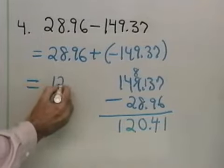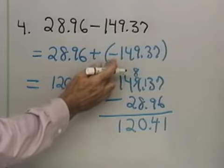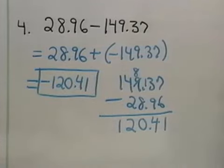That's the absolute value of the answer. And then, the sign of the answer is the sign of the number with the larger absolute value. So, negative 120.41.